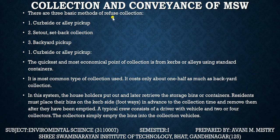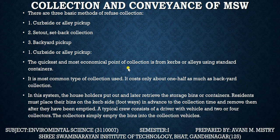There are three basic methods of refuse collection: curbside or alley pickup, set-out/set-back collection, and backyard pickup. The curbside or alley pickup is the quickest and most economical — the point of collection is from the curbs or alleys using standard containers. It is the most common type of collection used.